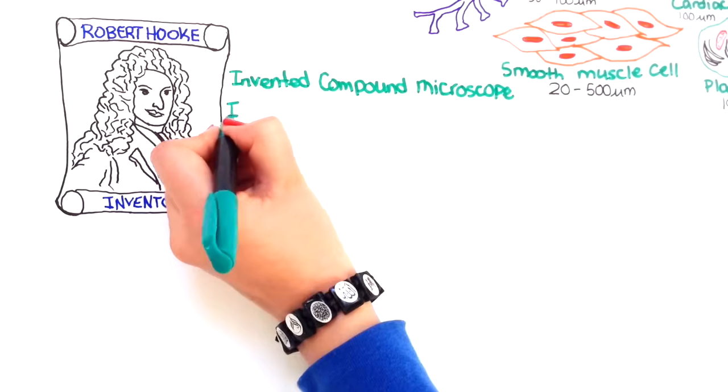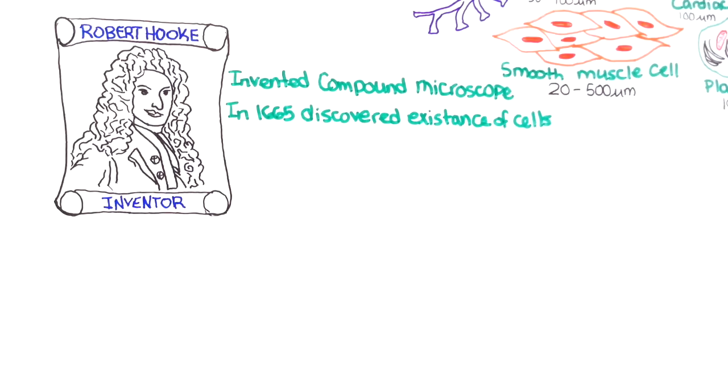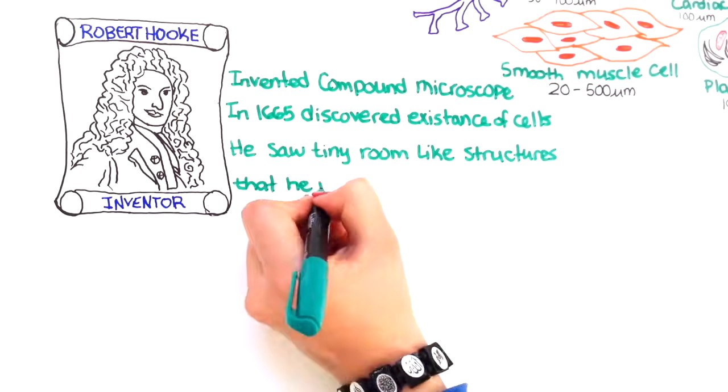In 1665, he discovered the existence of cells. While using the newly invented compound microscope to look at a thin slice of cork, Robert Hooke saw tiny room-like structures that he named cells.